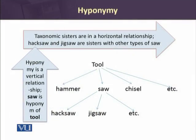Let's have a look at this diagram. In a horizontal relationship we have taxonomies in which sister terms belonging to the same category or field of knowledge are mentioned. In a vertical form, hyponymic relations are mentioned — hyponymy is a vertical relationship. For example, saw is a hyponym of tool because saw includes the meaning of tool. Hammer, saw, and chisel are sister terms. Similarly, hacksaw and jigsaw are sister terms because they relate to the same thing and belong to the same family.